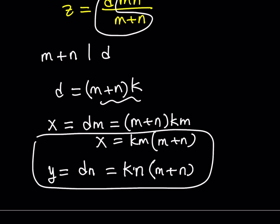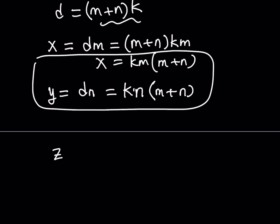So let's go ahead and write z like x and y. So we can do that basically, right? z was dmn divided by m plus n. And remember, our starting point was that m plus n divides d. So d is a multiple.